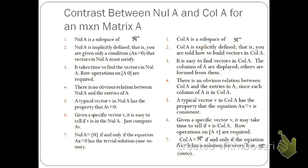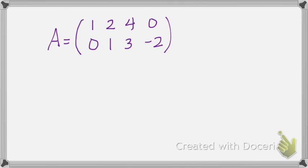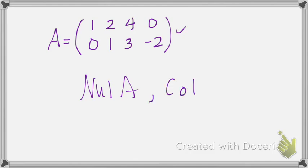For your reading assignment, define null space — null of A — and define column space — column of A. For part three, find an explicit description of the null of A by listing a vector that spans this null space, as well as the column of A for the given matrix.